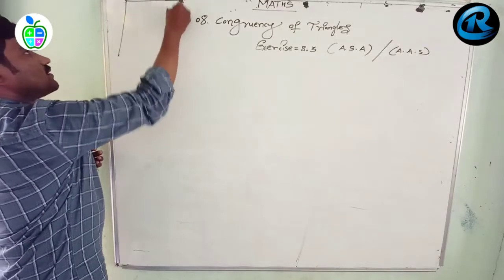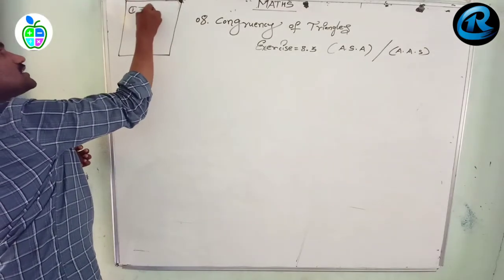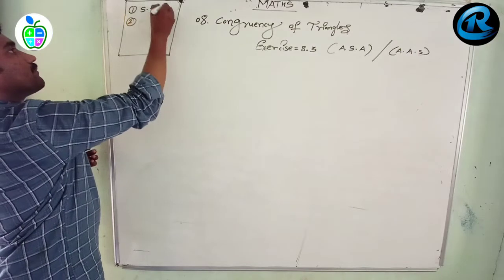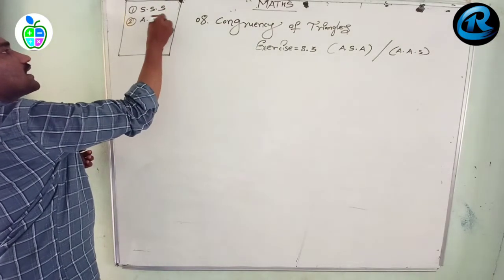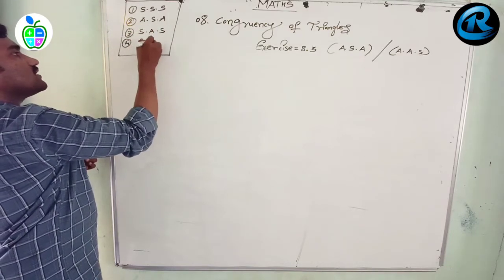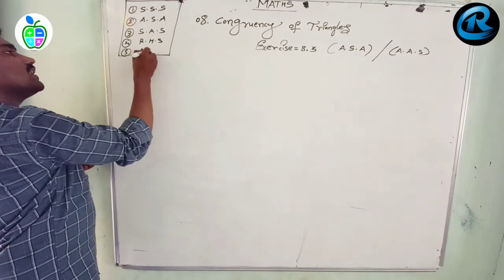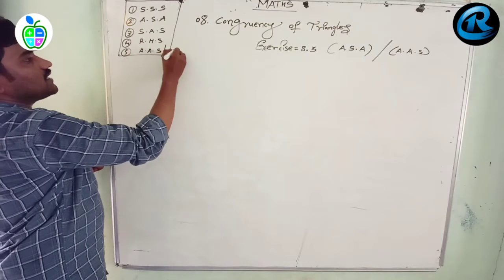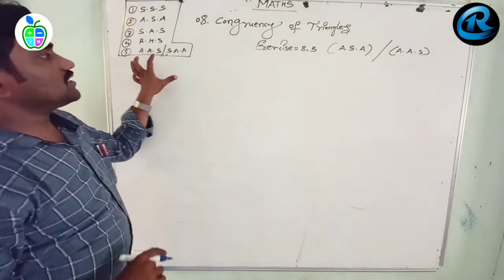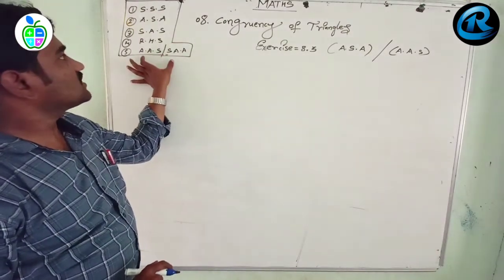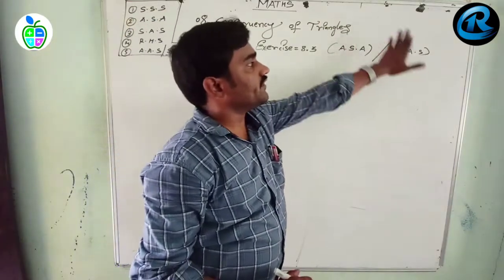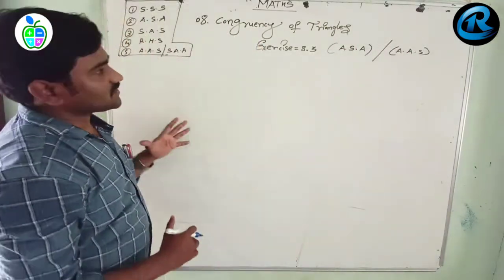There will be five congruency rules. The first one is side side side, the second one is angle angle side, the third one is side angle side, the fourth one is RHS, and the fifth one is angle angle side — both are the same. The angle angle side rule is derived from the angle side angle criteria.